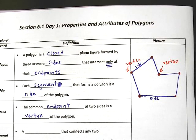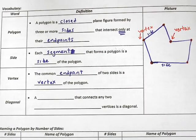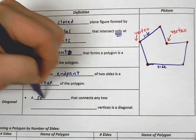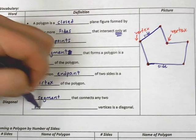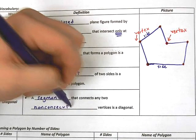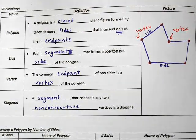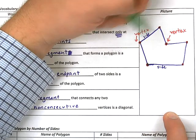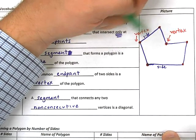Now the last piece of information we need to talk about is the word diagonal. Sides and vertices you probably have a good understanding of, but diagonals are a little bit different. Diagonals are segments that connect any two non-consecutive vertices. Let me explain non-consecutive: if I take this vertex and this vertex and connect them, those are consecutive vertices, and when I connect them I actually form a side. So I would not form a diagonal there.